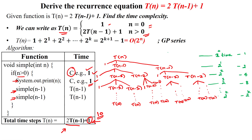This follows the GP series: 1 + 2^1 + 2^2 + ... + 2^k = 2^(k+1) - 1. Finally we can write this as O(2^n).